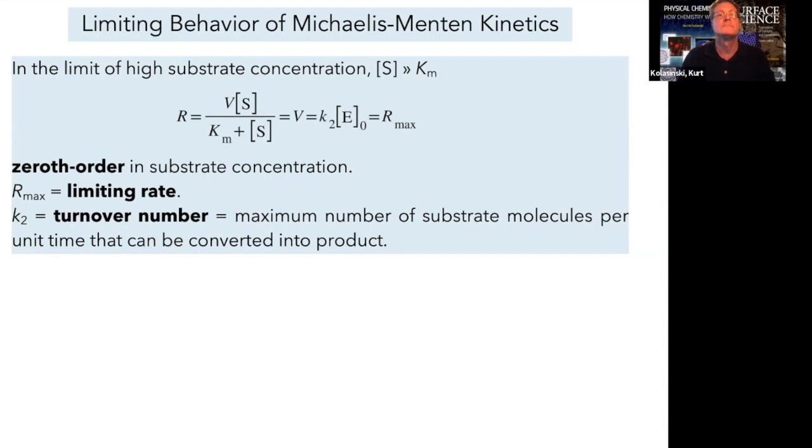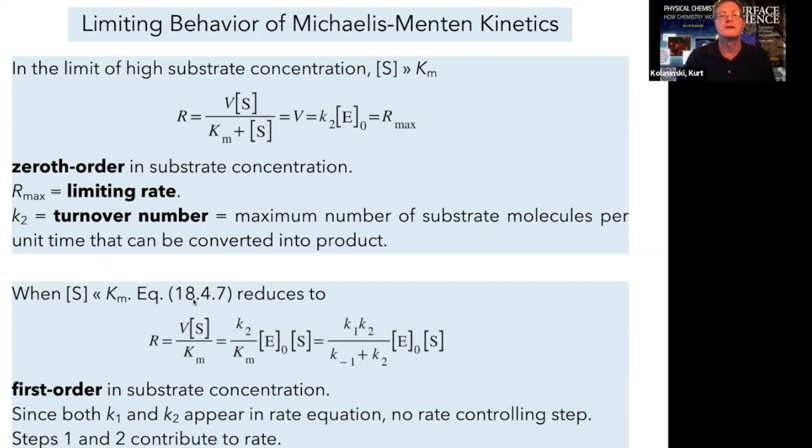In the opposite limit, S is small compared to Km, okay, we'll get Vs over Km. Substituting in, what we'll see is this equation now in this limit goes over to first order in substrate concentration, and we'll see that both K1 and K2 appear in the rate equation, so we don't have one well-defined rate determining step. Both K1 and K2 contribute to the rate.